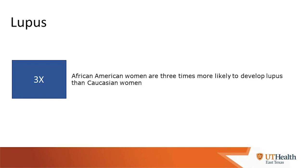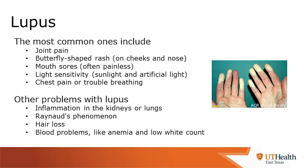African-American females are three times more likely to develop lupus than Caucasian females. Common symptoms of lupus include joint pain, a butterfly-shaped rash on the cheeks and nose, painless mouth sores, sensitivity towards light — including both sunlight and artificial light — and chest pain or trouble breathing. Other more rare symptoms include inflammation in the kidneys or lungs, and Raynaud's phenomenon, which is a discoloration of the fingertips when patients are exposed to the cold.